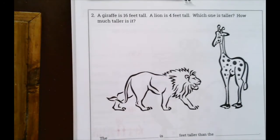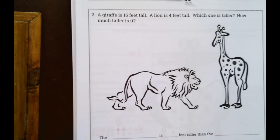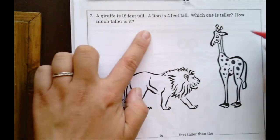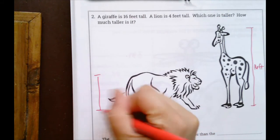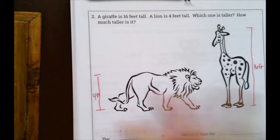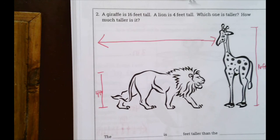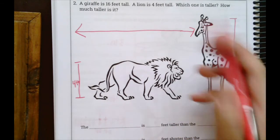Let's go to the second input model. A giraffe is 16 feet tall. A lion is four feet tall. Which one is taller? How much taller is it? We're not using our fingers here because we don't have a giraffe to measure against — they already give us the measurements. We know the giraffe is 16 feet tall and the lion is four feet tall. Once I know my measurements, I need to set up my number line. I'm going to go all the way to 20 so both numbers can be on the line.